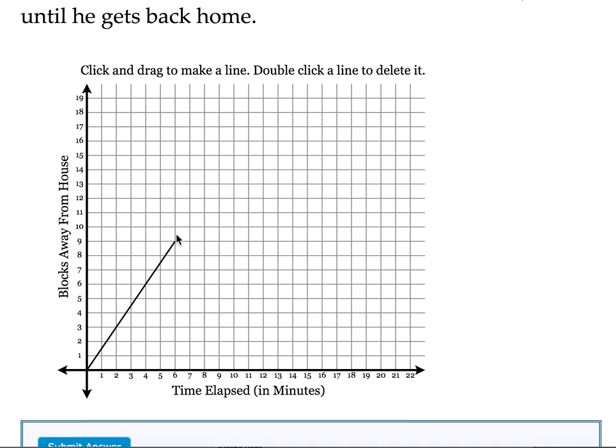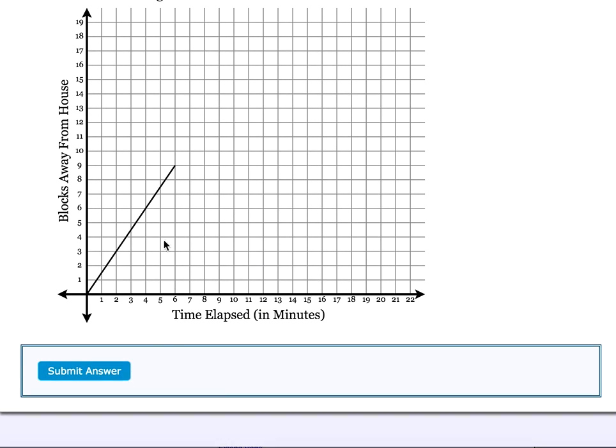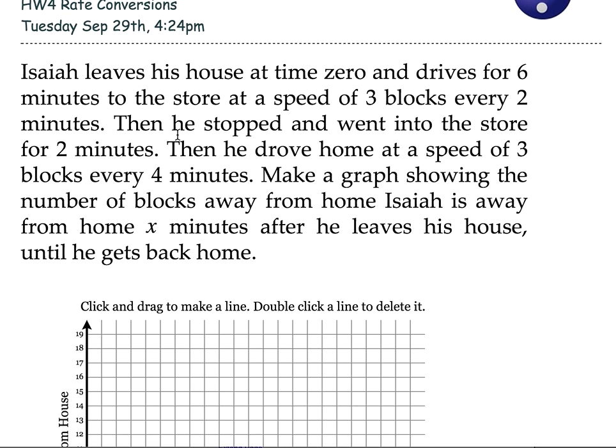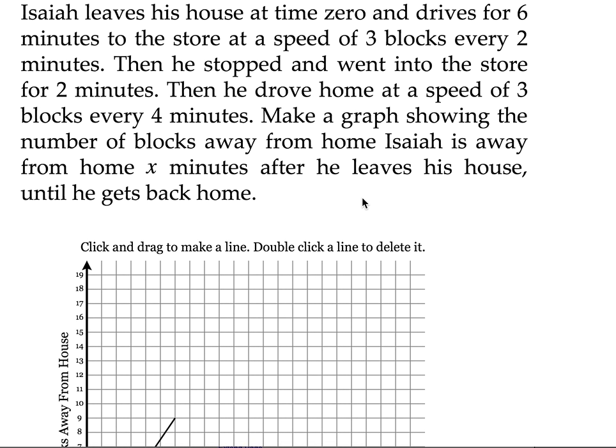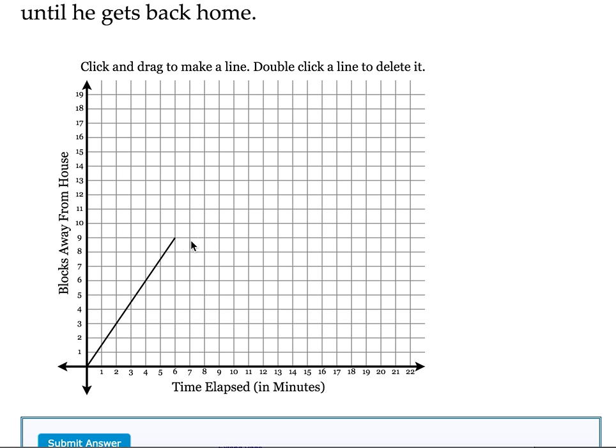For a total of 6 minutes he's driving, so this means he is 9 blocks away. Because 2 times 3 is 6, so 3 times 3 is 9. He will have gone 9 blocks. It then says he went to the store for 2 minutes. When he's in the store he's not going away from his house, so we have to draw a horizontal line for 2 minutes. He stays constant.